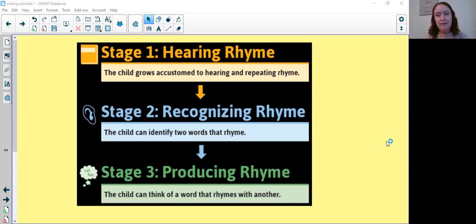Then they move on to stage two, which is when they can recognize a rhyme - two words that rhyme themselves. You could figure out where your child is at with that by just saying two words and asking them if they rhyme.